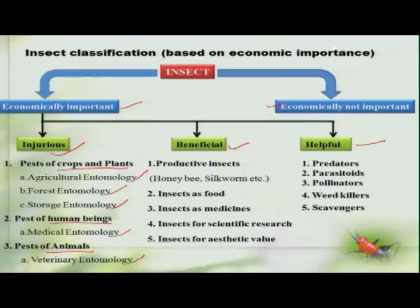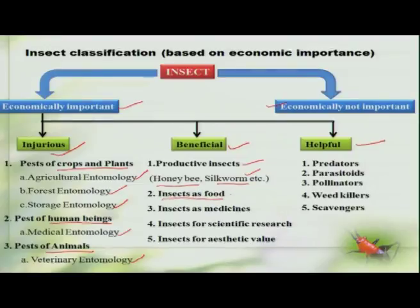Coming to the beneficial group of insects, we have insects such as the honey bee which directly give products in the form of honey and wax, the silkworm which gives silk, and the lac insects which give lac — all referred to as productive insects. In many parts of the world including India, insects also serve as food. Insects are also used in the medicinal field; Drosophila melanogaster is a classic example in scientific research. The beauty of butterflies and beetles also gives insects an aesthetic value.